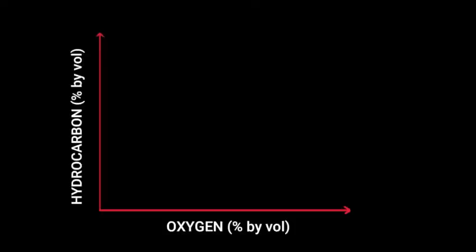On the x-axis, we have the oxygen content in terms of percent by volume and on the y-axis, we have the hydrocarbon gas content in terms of percent by volume. The hydrocarbon gas extends from 0% to 15% by volume, and the oxygen content extends from 0% to 21% by volume.